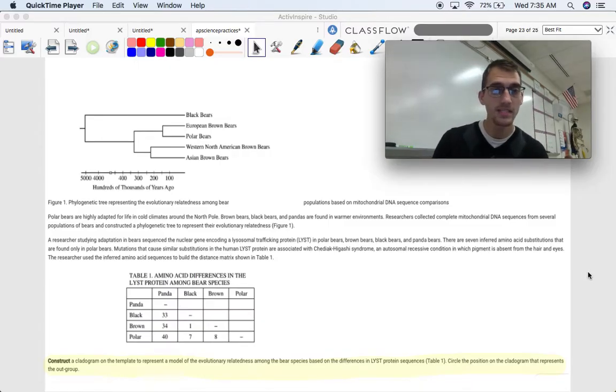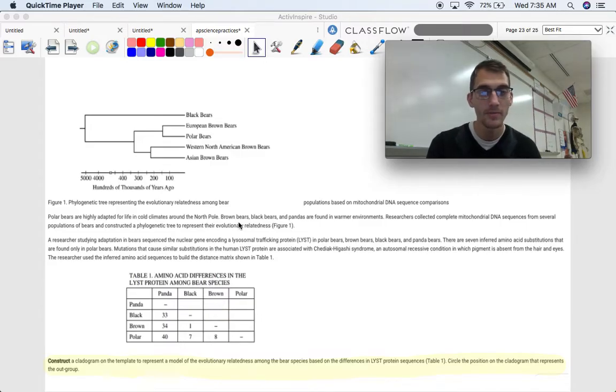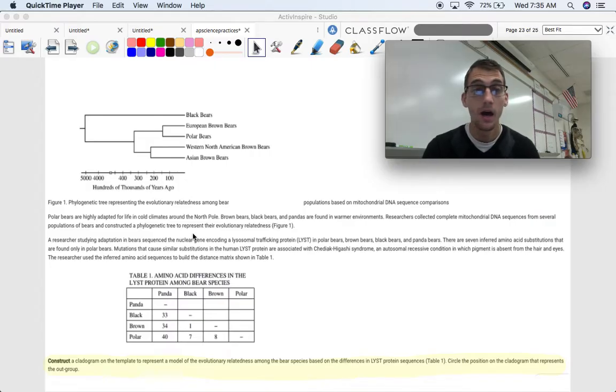So here's an example of something that you might see. Here's a phylogenetic tree of different polar bears. Here's amino acid differences in the lysed protein among bear species. And you'd have to read this for context about what those proteins are. And then, check it out, like I said, construct a cladogram on the template to represent a model of the evolutionary relatedness among the bear species based on the differences in lysed protein sequences in table one. Circle the position on this cladogram that represents the out-group. So based on this visual representation up here, and then this table down here, you're going to have to make your own for this question. And I didn't include the template of the cladogram, but you would be given a template, and then you'd have to circle the out-group. So like I said, you can't really do a multiple-choice question for this type because it's asking you to make a visual representation of what you're seeing.